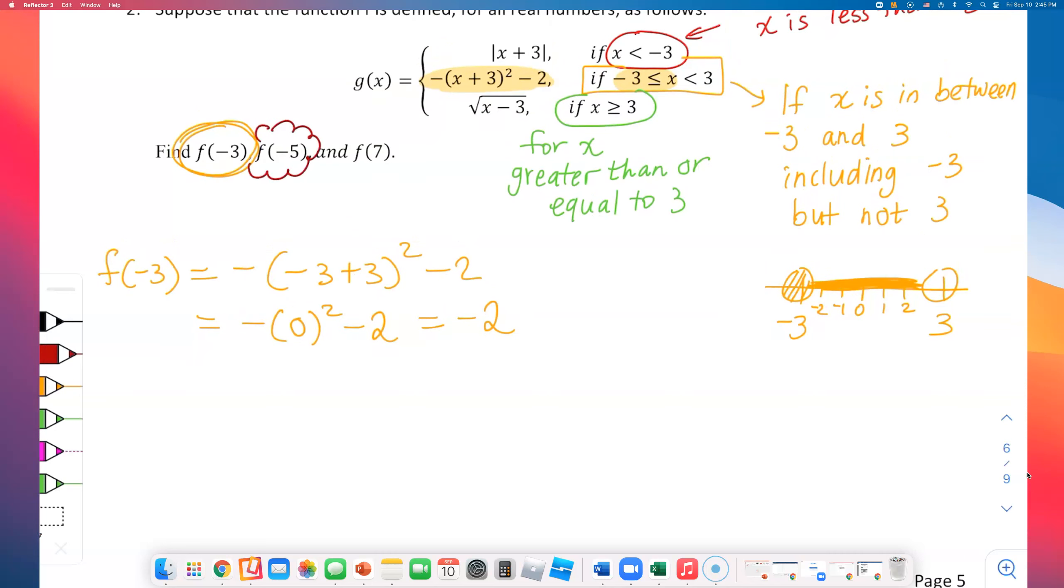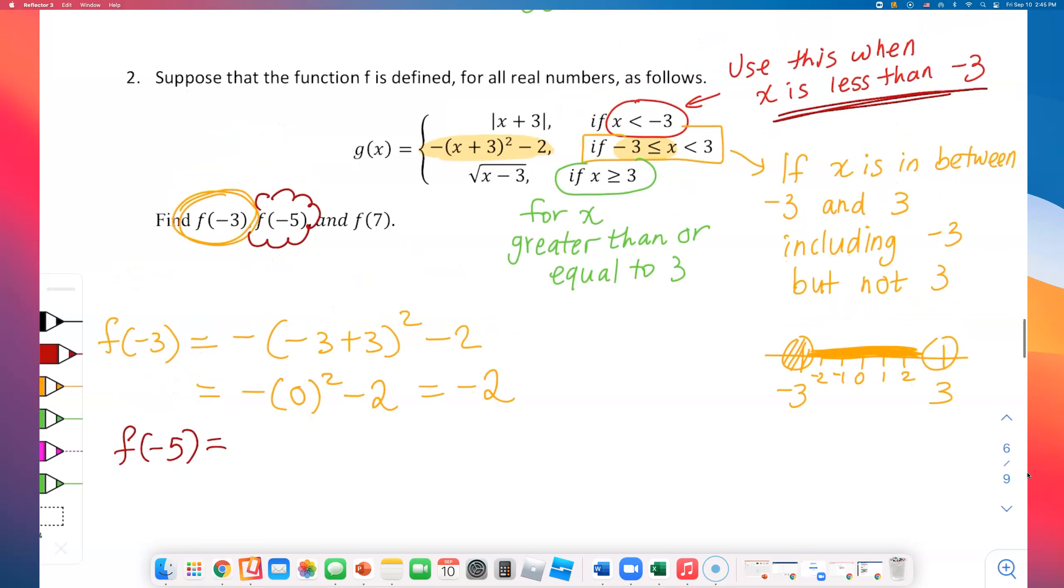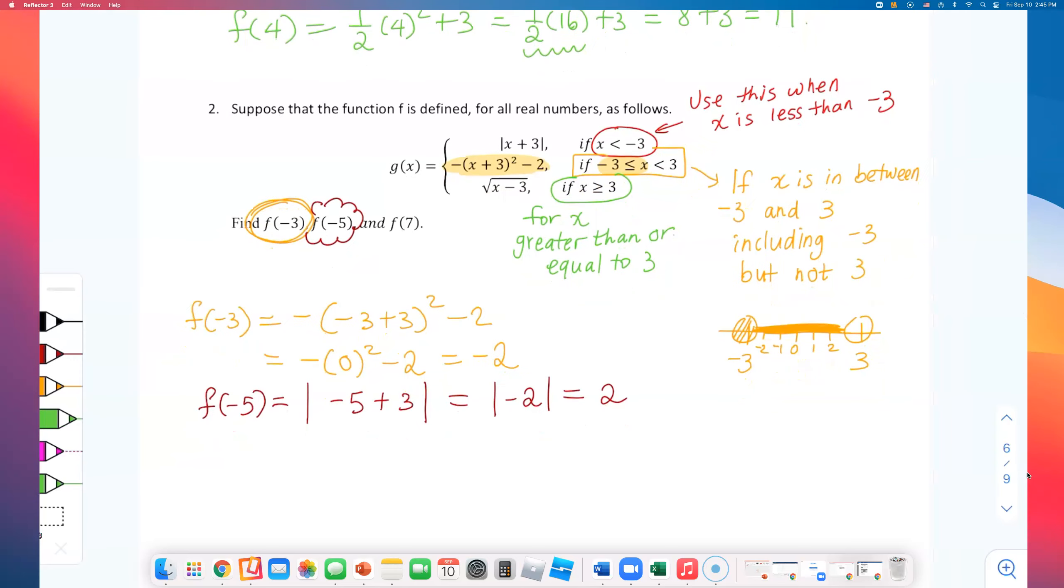What about the next term? Our next problem is f of negative 5. Negative 5 is smaller than negative 3. So I will go with the top piece, which is that absolute value function. Absolute value of x plus 3. So do negative 5 plus 3. That is absolute value of negative 2. And absolute value of negative 2 is positive 2. So we're done with the second one.